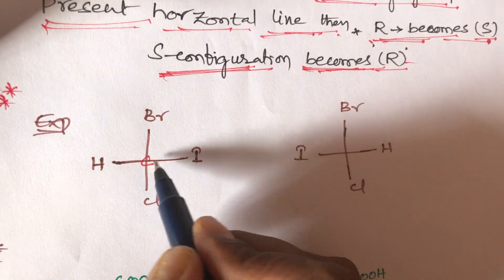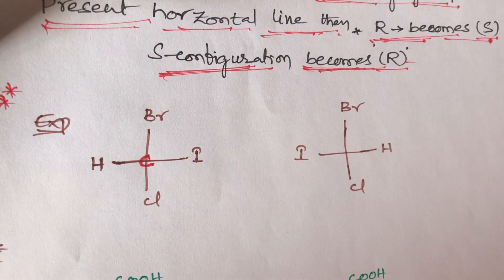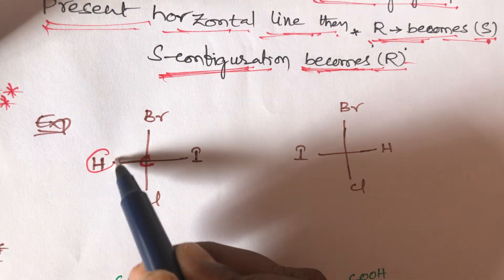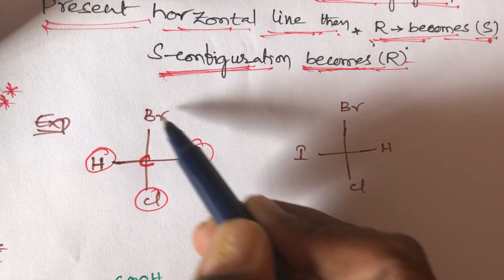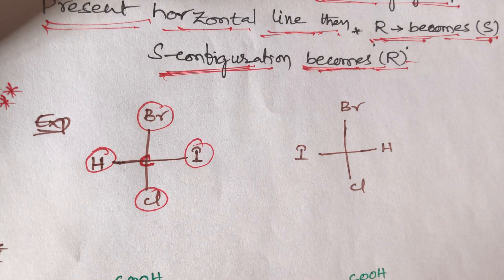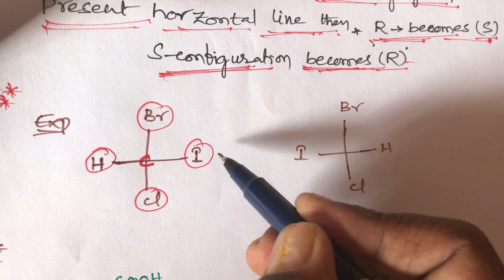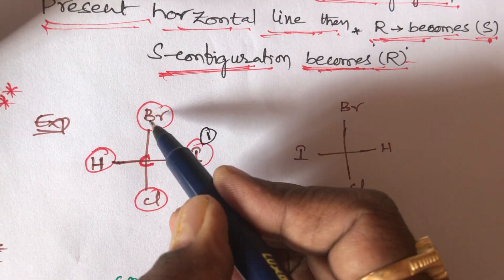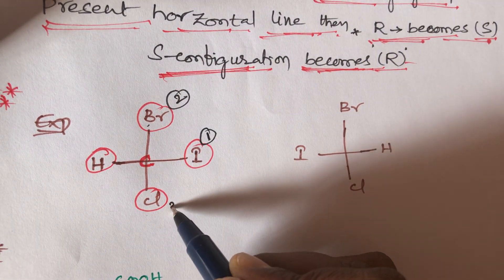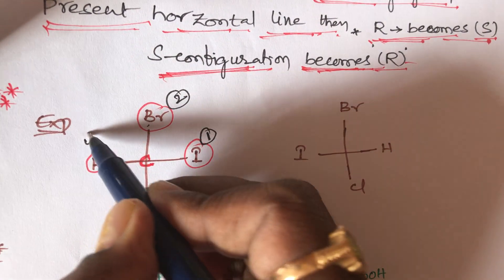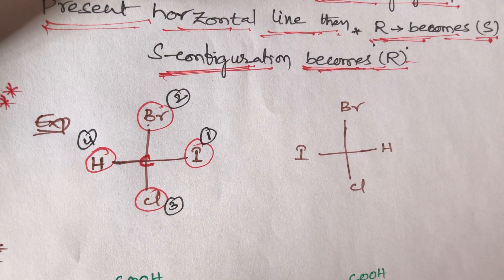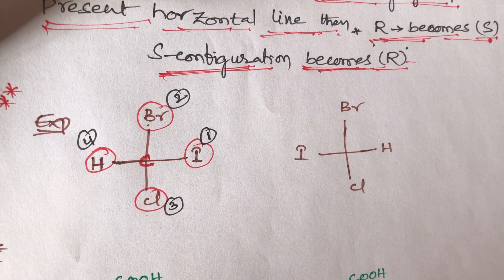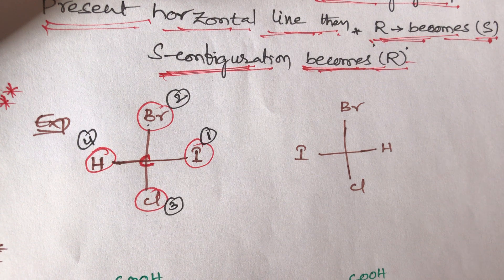Now take this example: a chiral carbon having four different groups — hydrogen, chlorine, iodine, and bromine. The priority order here is: iodine is first, bromine is second, chlorine is third, and hydrogen is the least priority (fourth). Here, the least priority group, hydrogen, is present on the horizontal line. So R configuration becomes S and S configuration becomes R.